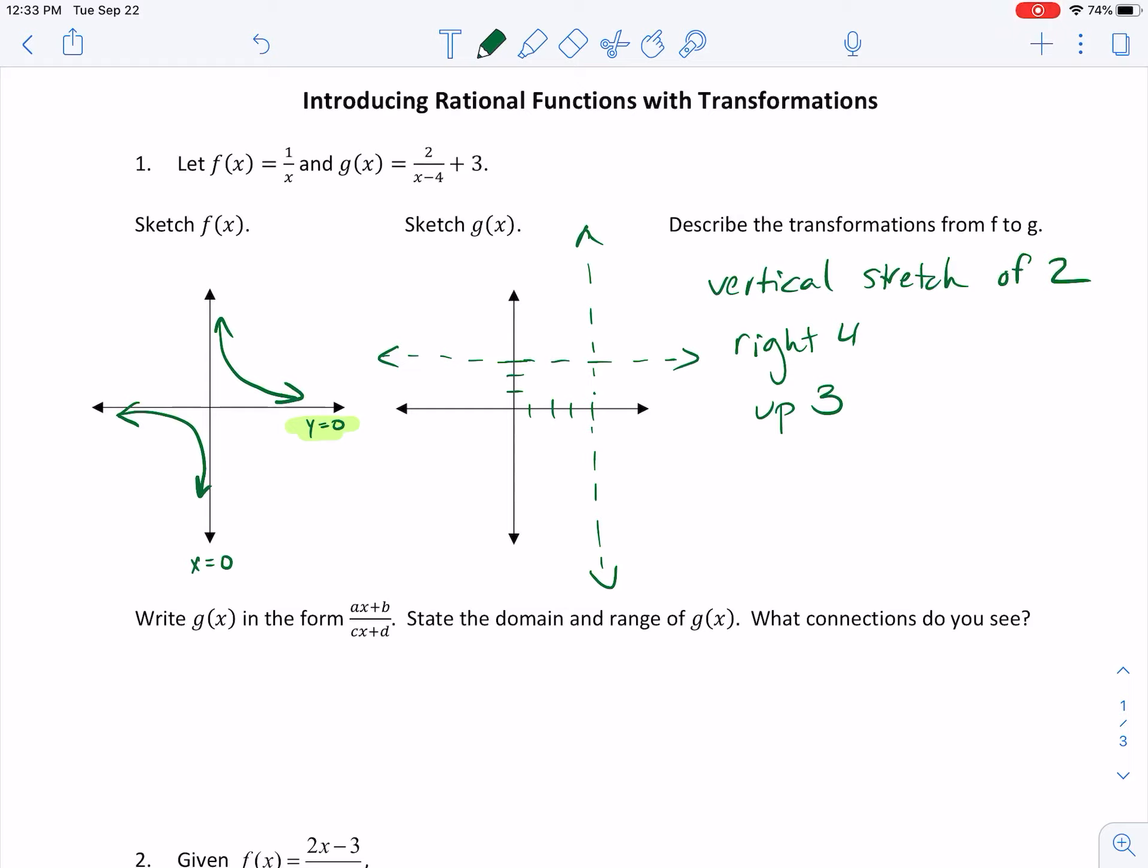So what I might do, depending on how precise I need you to be, typically we'll be precise with our x-intercepts, our y-intercepts, and any holes that we might have, we'll talk about that later, but I'm not overly concerned about points, but just to illustrate this, what I would do is I would go on either side of my vertical asymptote, and say okay, so what happens when I plug in 3. g of 3 would be equal to 2 over 3 minus 4 plus 3, which is equal to negative 2 plus 3, which is equal to positive 1, so I'm at the point 3, 1.